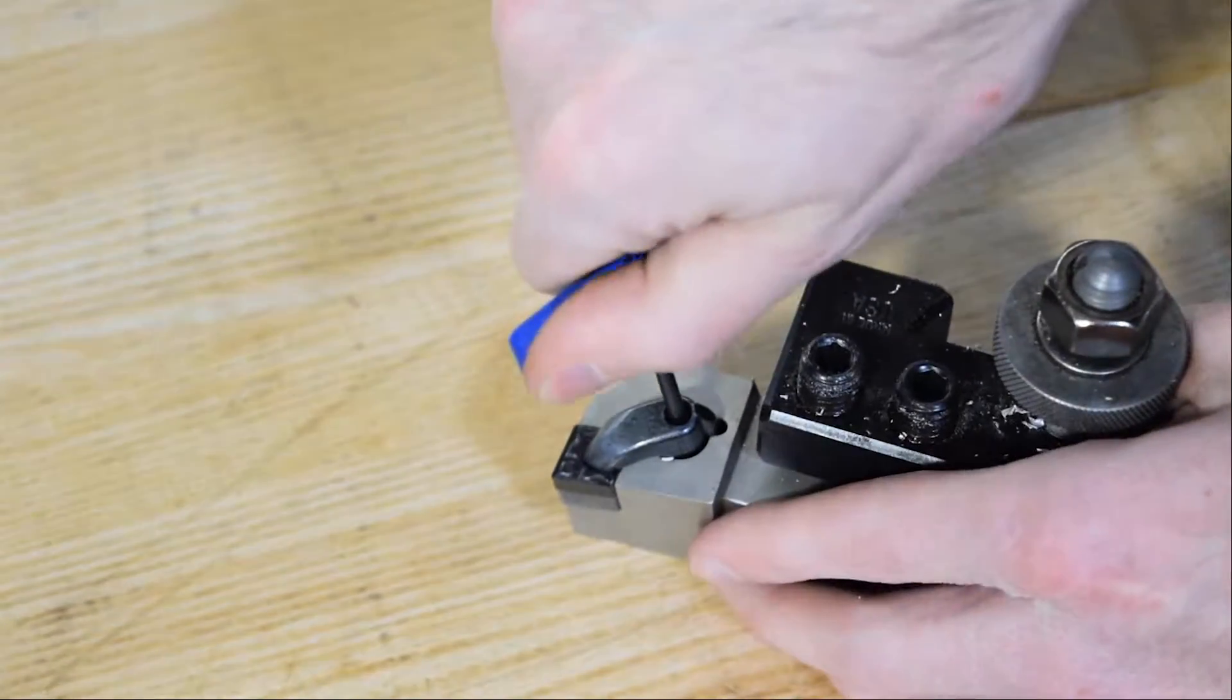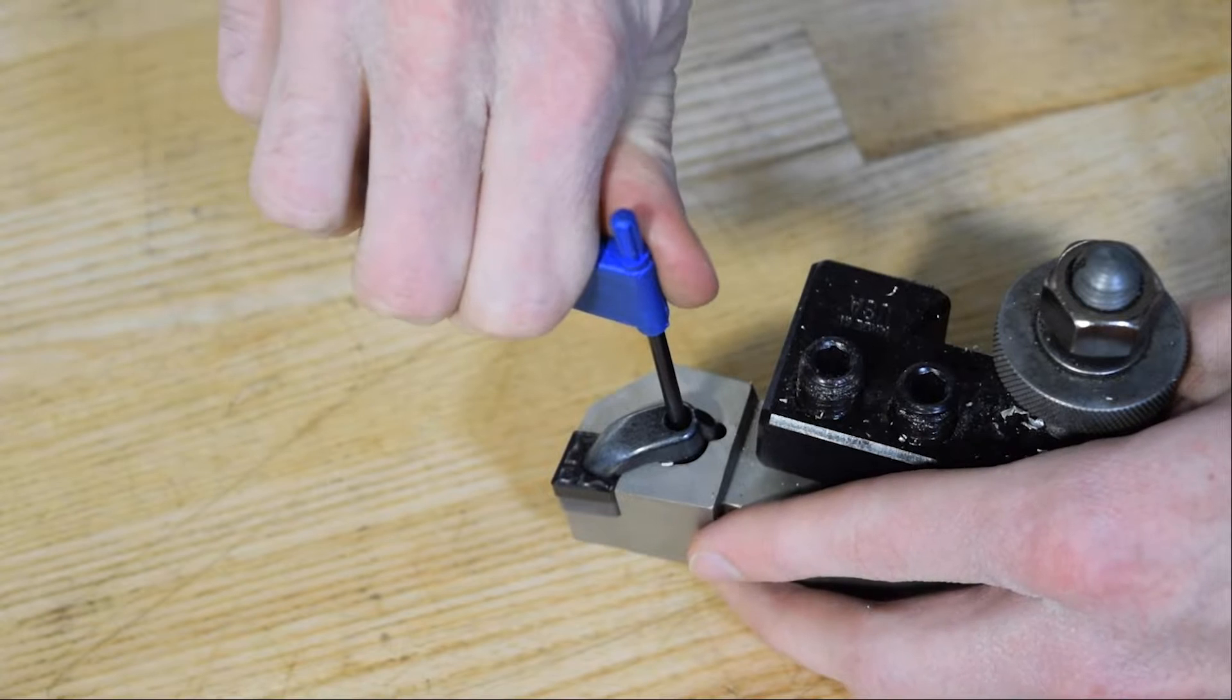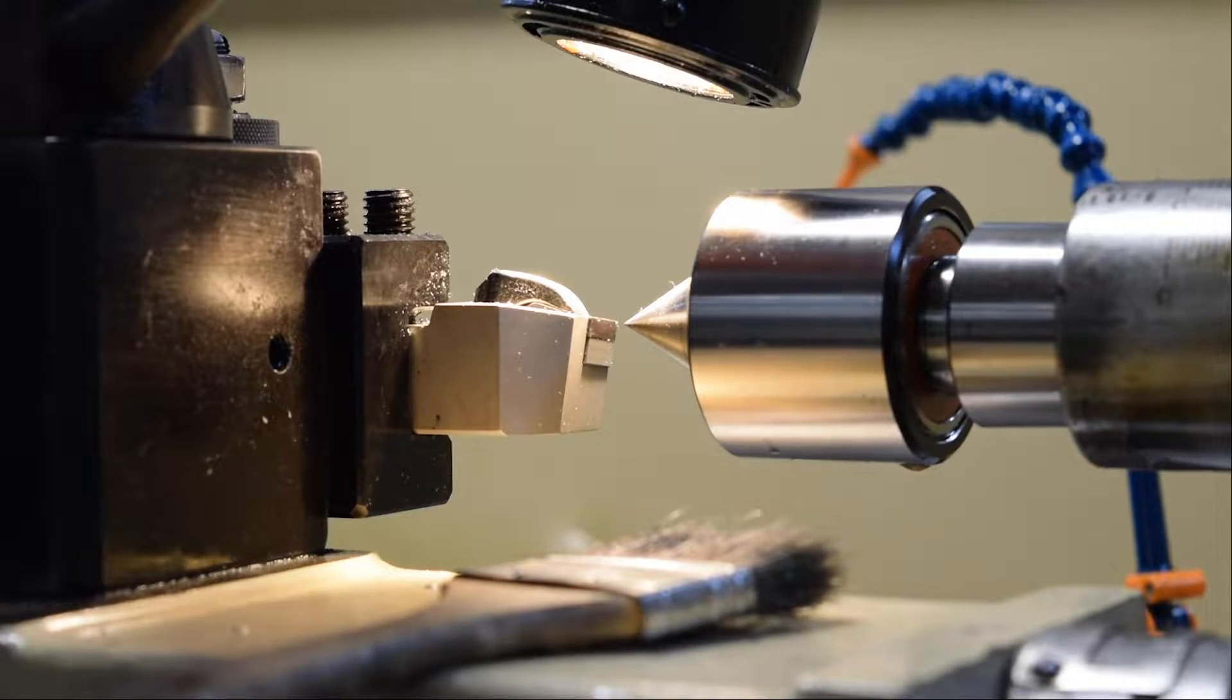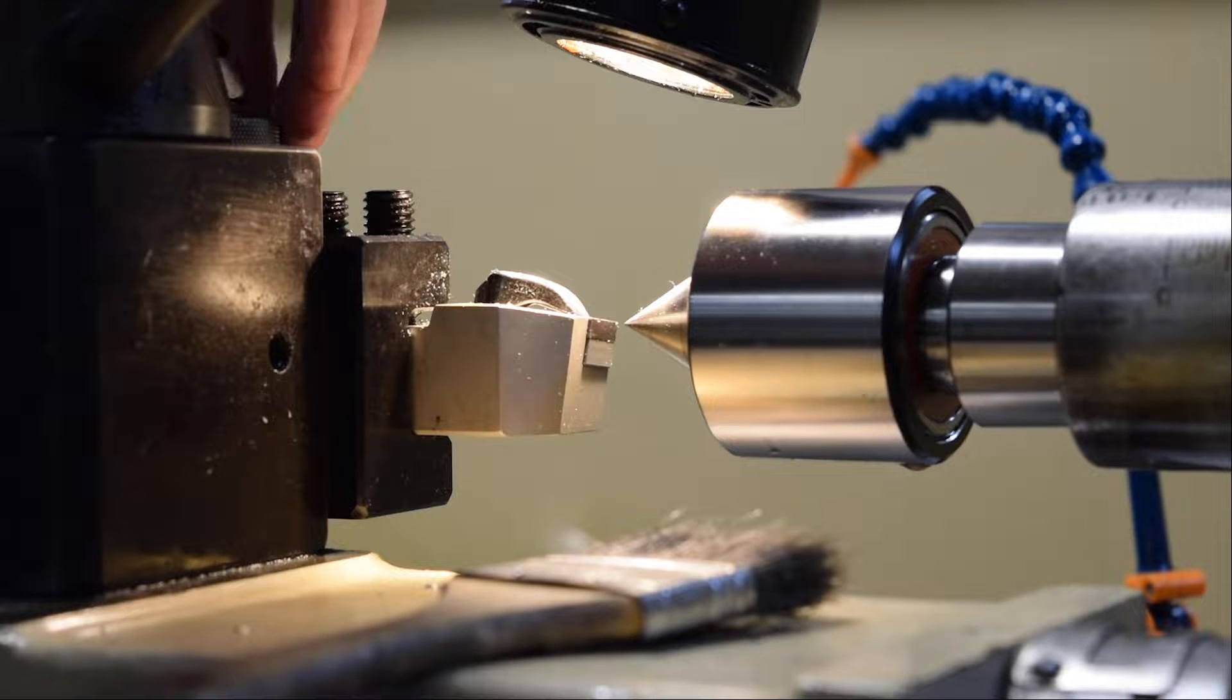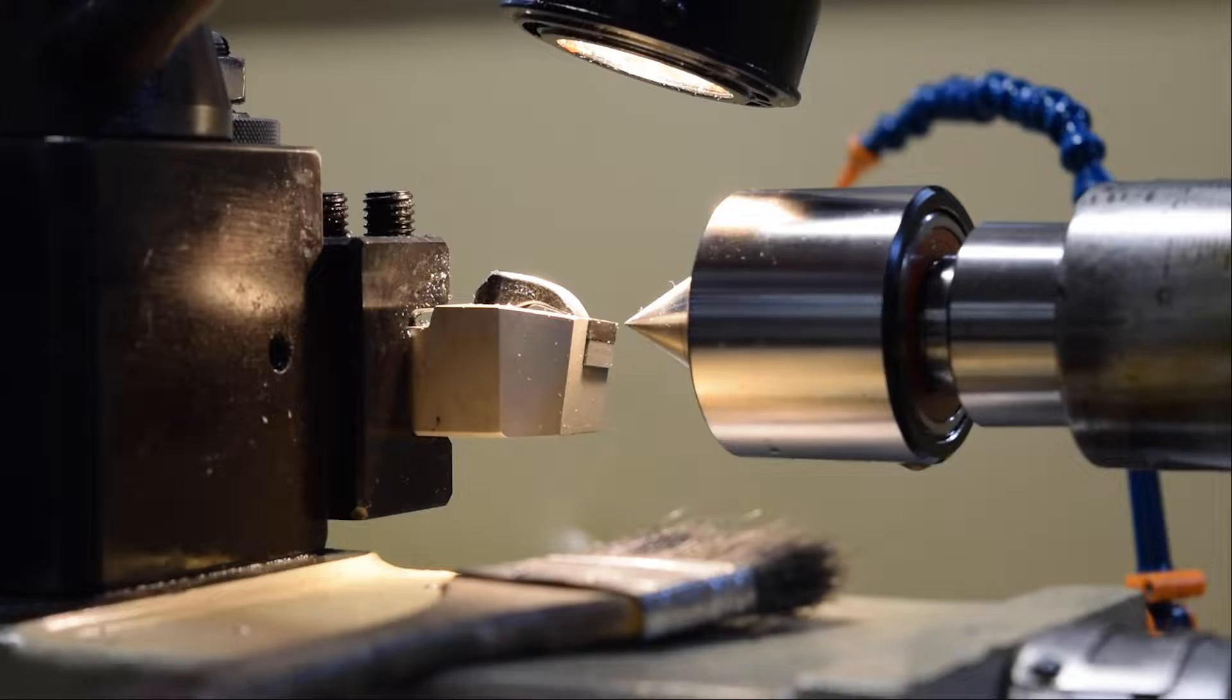The insert that ended up working the best was this CNMG 432 from ISCAR. We tried a few other inserts, and they didn't really work that well. This was the only one that really could touch the drill rod. But this really comes down to just as much technique as it does the particular insert that you use.